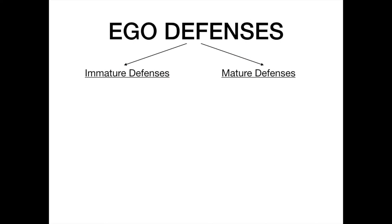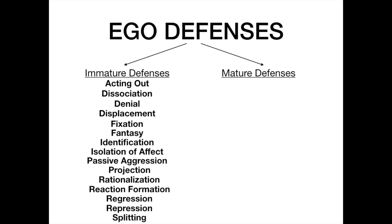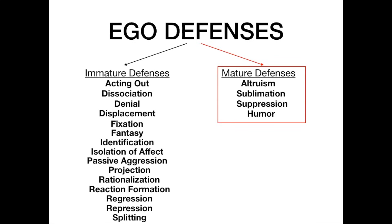Ego defenses can be broken down into either immature defenses or mature defenses. There's a very long list of immature defenses and a very short list of mature defenses. The dichotomy between immature and mature defenses really doesn't matter for USMLE and COMLEX — this may matter in your psychiatry exam if you're still a medical student, but otherwise you don't need to know the difference. It helps provide structure, so we'll start with the shorter list: mature defenses.